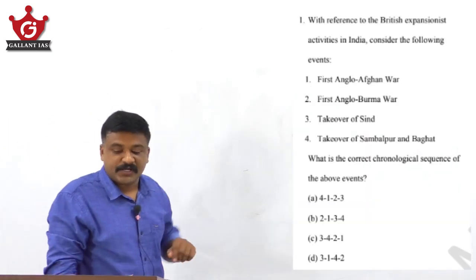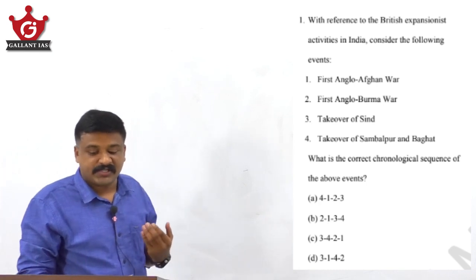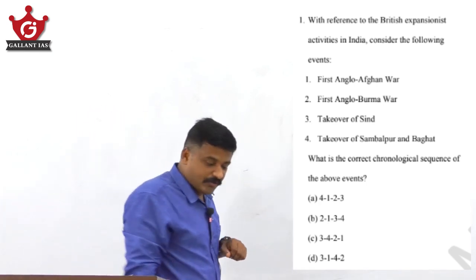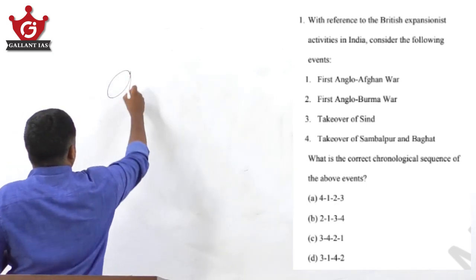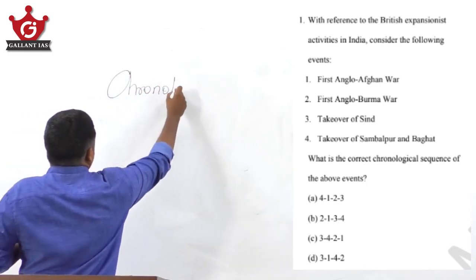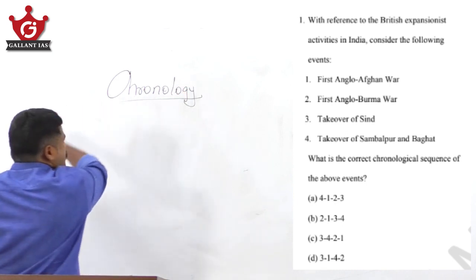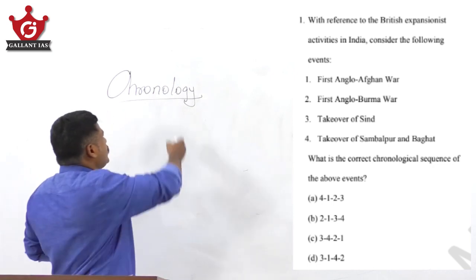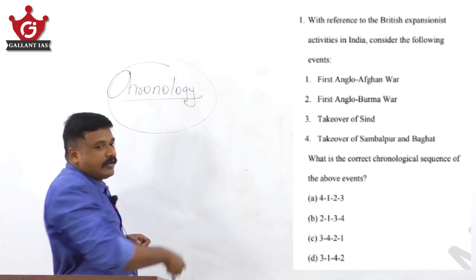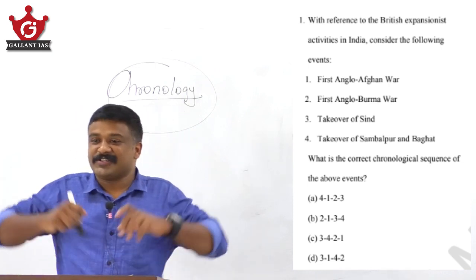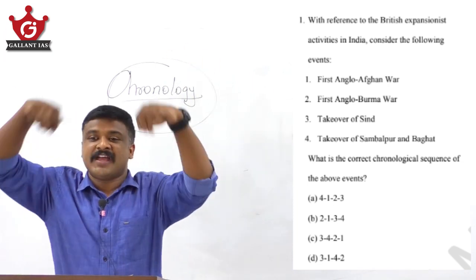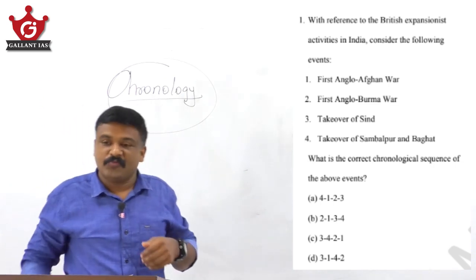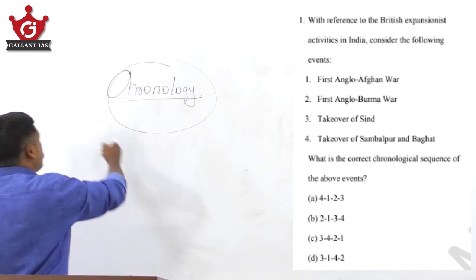The first question, with reference to British expansionist activities in India, asks you to consider the following events. That's a very beautiful question UPSC asked — it's about chronology. Chronology is a very interesting area, and one of the most difficult types of questions. So, coming to this chronology, what is the strategy for chronology questions?